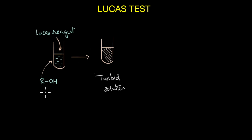You see the primary, secondary and tertiary alcohols react at very predictable rates with our Lucas reagent. And we can use these rates and the time of reaction to distinguish between the different types of alcohols.